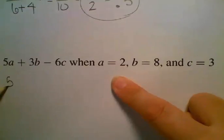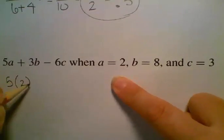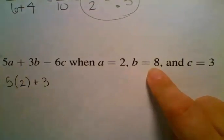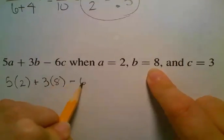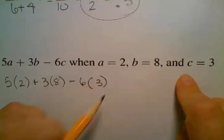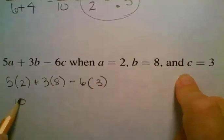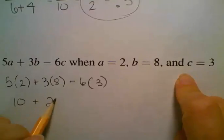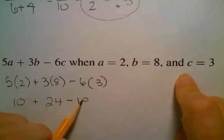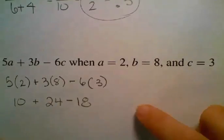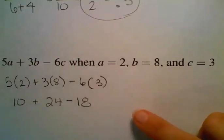So 5 times 2 plus 3 times 8 minus 6 times 3. We have 10 plus 24 minus 18. Now we have to remember to do these calculations using the order of operations.